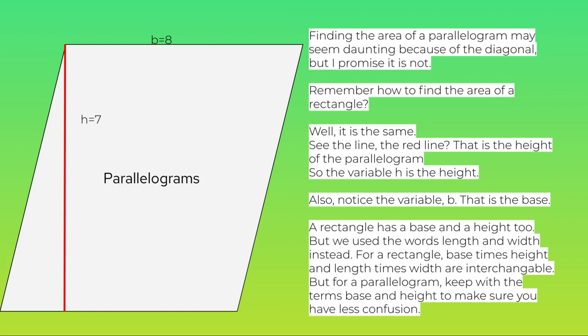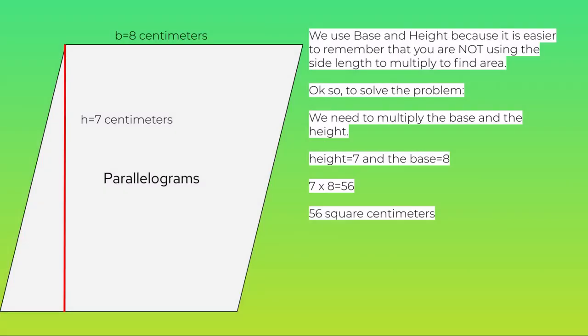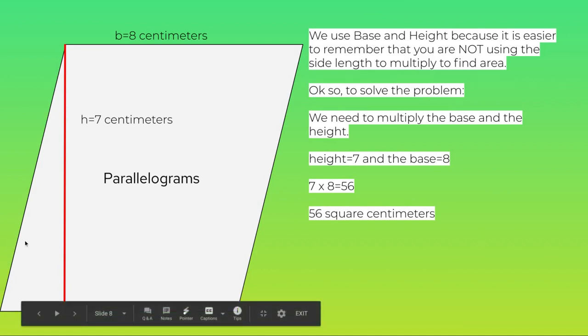Also, notice the variable b. That is the base. A rectangle has a base and a height as well, but we use the words length and width instead. For a rectangle, base times height and length times width are interchangeable. But for a parallelogram, keep with the terms base and height to make sure you have less confusion.